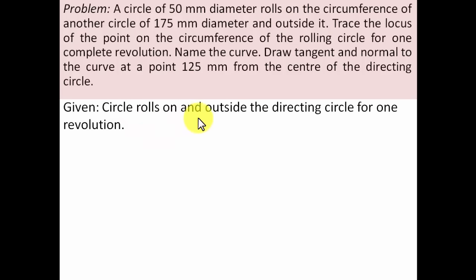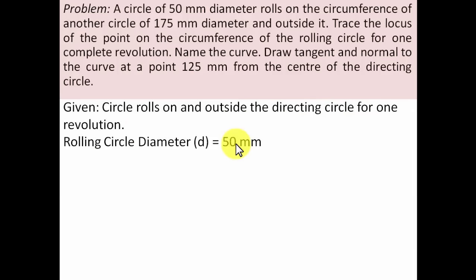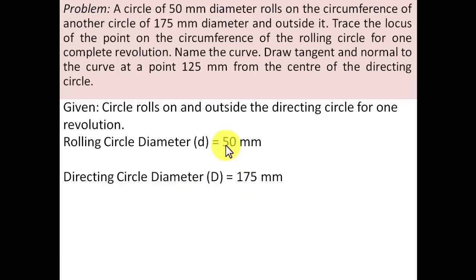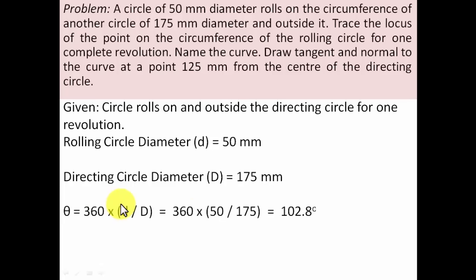The rolling circle rolls on and outside the directing circle for one complete revolution. The rolling circle diameter is 50 mm, and the directing circle diameter is 175 mm. So the radius of the rolling circle is 25 mm, and the radius of the directing circle is 87.5 mm. The angle subtended at the center of the directing circle is computed with the formula 360 × d/D, giving 102.8 degrees.